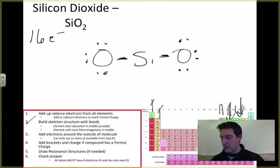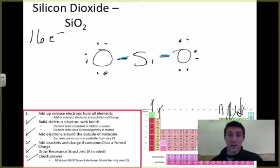So we go back and we start checking off our list all the way down the line. We go to check our answer, and one thing we should find, just like we found in the last example, is that this silicon only has four electrons around it. It needs to have eight electrons and we can't add more.